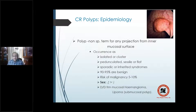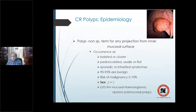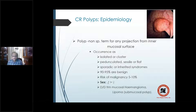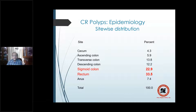95% of polyps are benign. The chance of having malignancy in a polyp is about only 5% to 10%. Sex is almost equal in certain instances, but by and large males are more involved than females. Polyps have to be differentiated from mucosal hemangiomas, lipomas, or submucosal polyps, which are raised above the surface.